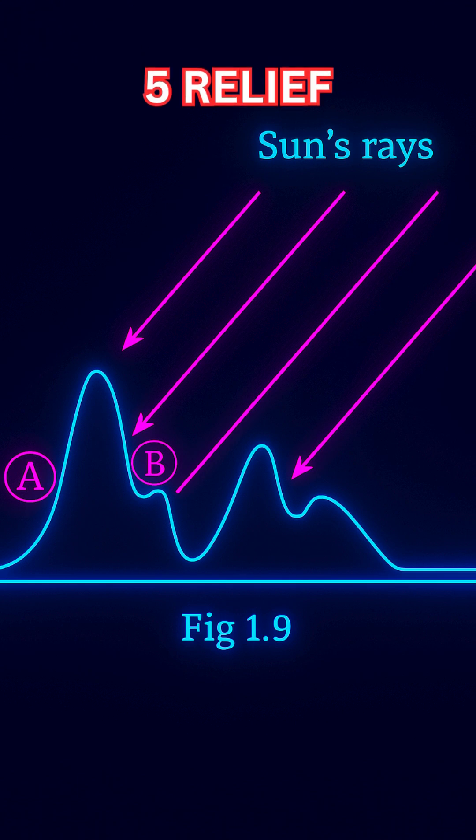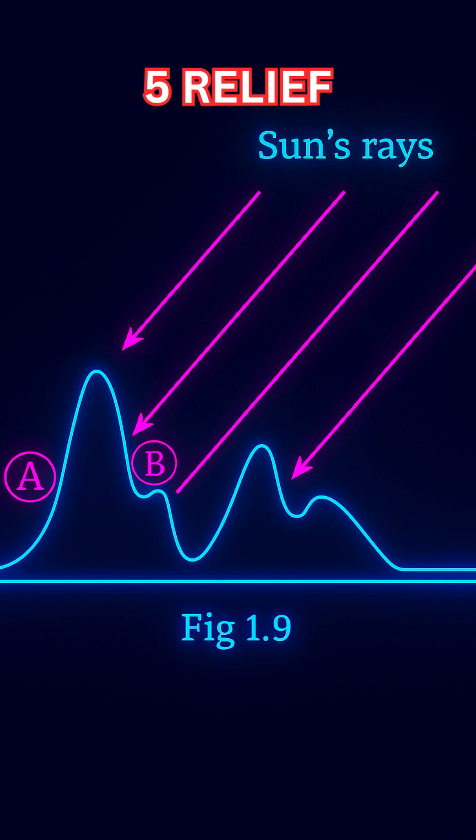Fifth, Relief. The availability of sunlight differs from one place to another in accordance with the relief. Due to this difference, the mountain slopes facing the sun experience higher temperature and opposite slopes experience lower temperature.